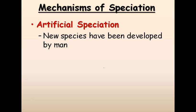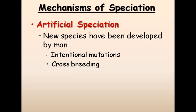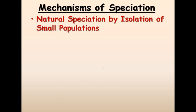Mechanisms of speciation include artificial selection and natural selection, with natural selection being most common. Through artificial selection, we can choose different characteristics in birds and other pets to select features we want and discard those we don't. New species have been developed this way through intentional mutations, crossbreeding, and genetic engineering, which is a very important tool for creating artificially selected organisms.